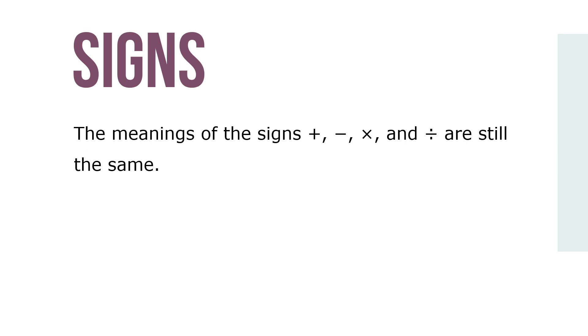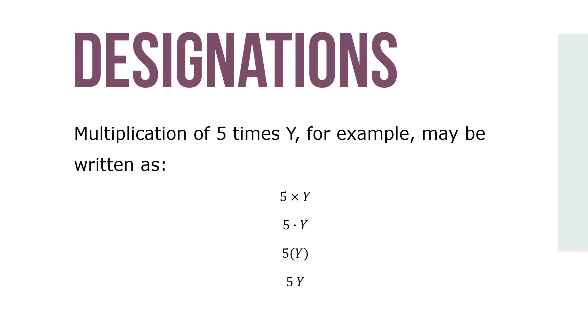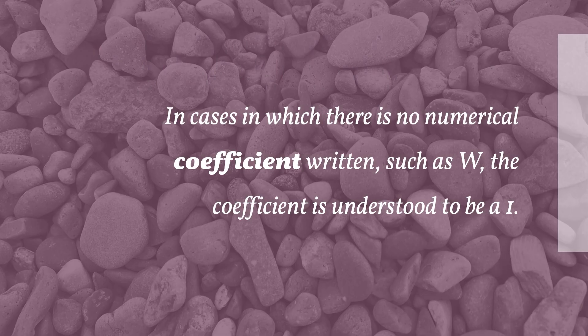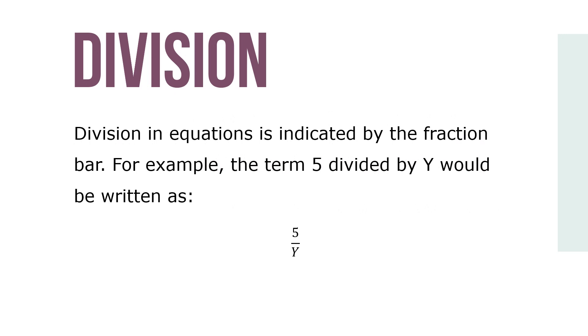The meanings of the signs plus, minus, times, and divided by are still the same. Equations have a few fundamental designations that we must learn. Multiplication of 5 times y, for example, may be written as 5xy, 5 dot y, 5 with the y in parentheses, or simply 5y. The number 5 in the term 5y is known as the coefficient of the term. In cases in which there is no numerical coefficient written, such as w, the coefficient is understood to be a 1. Therefore, 1w equals w. Division in equations is indicated by the fraction bar; for example, the term 5 divided by y would be written as a fraction.